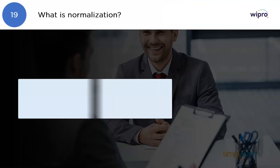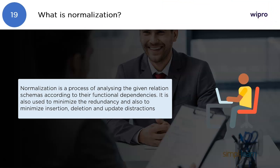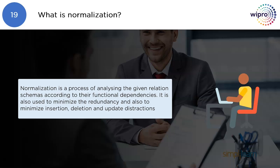What is normalization? Normalization is a process of analyzing the given relationship schema according to their functional dependencies. It is also used to minimize redundancy and to minimize insertion, deletion, and update anomalies.